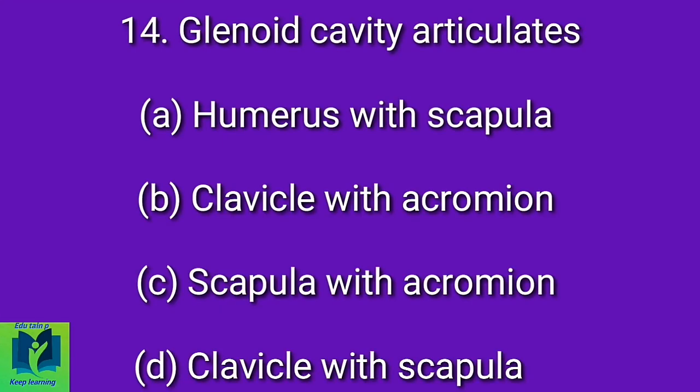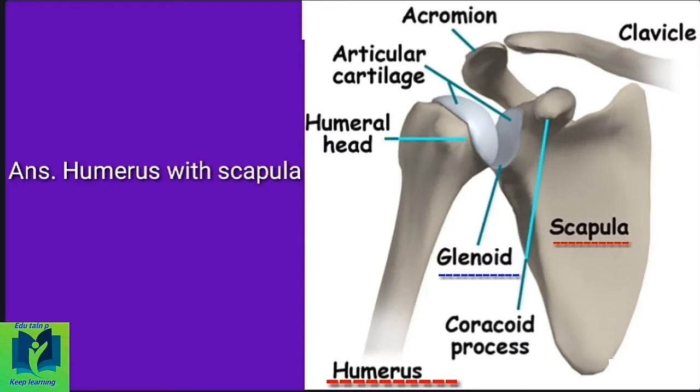Glenoid cavity articulates dash. Option A: Humerus with scapula. Option B: Clavicle with acromion. Option C: Scapula with acromion. Option D: Clavicle with scapula. Answer: Humerus with scapula.